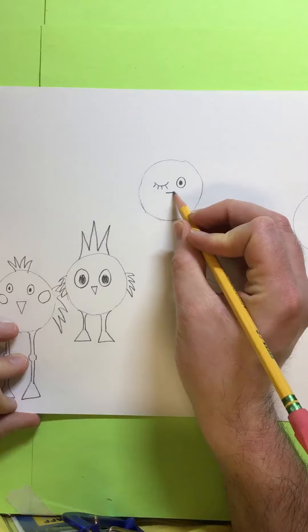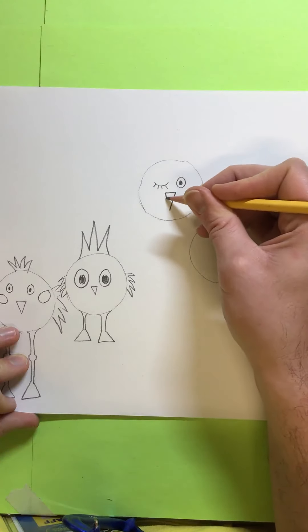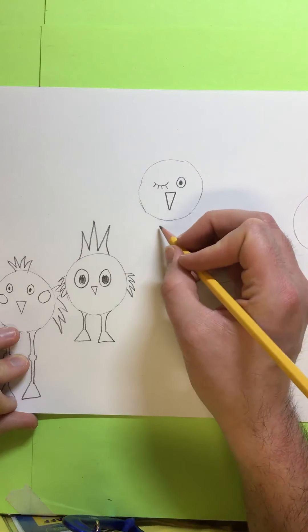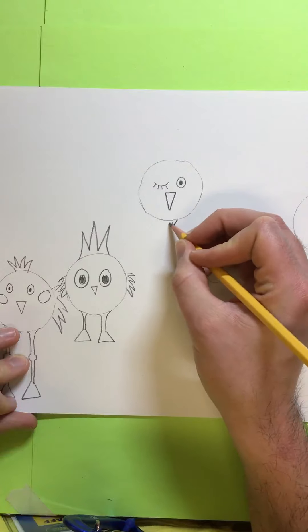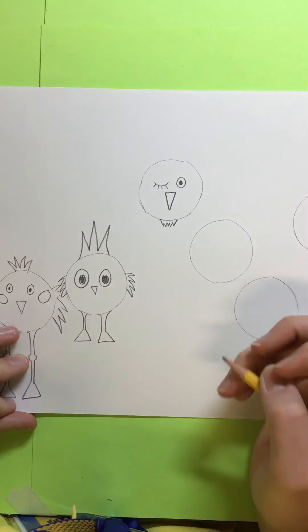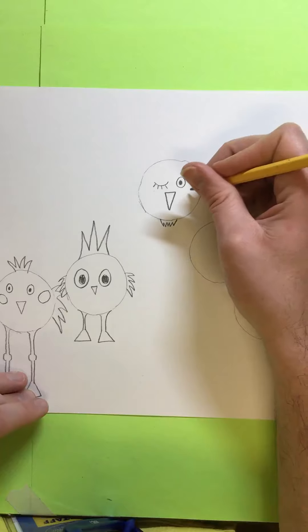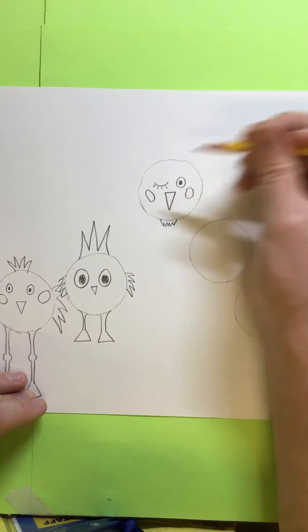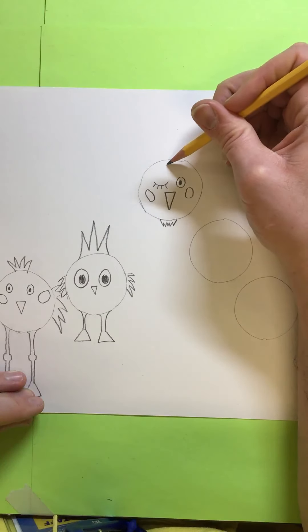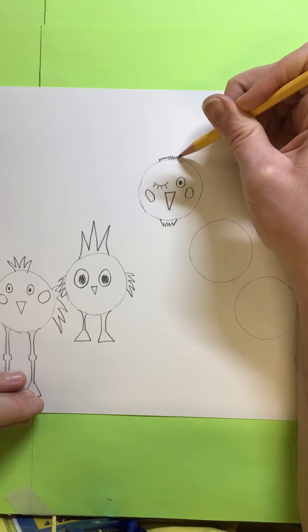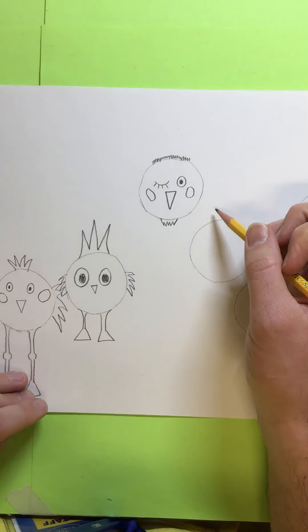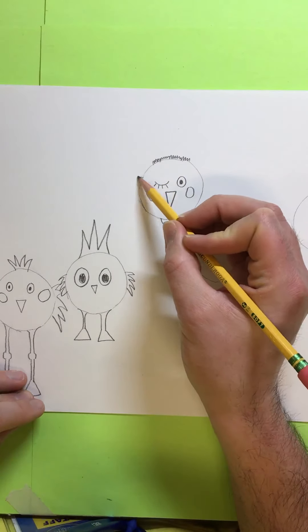And this one, let's give this one a different beak. Let's give this one a long beak. And let's give this one, maybe we'll give this one a little beard. I don't know, something different. And we'll give this one rosy cheeks. And this one, let's give this one really short, spiky hair. And this one, let's do big wings.